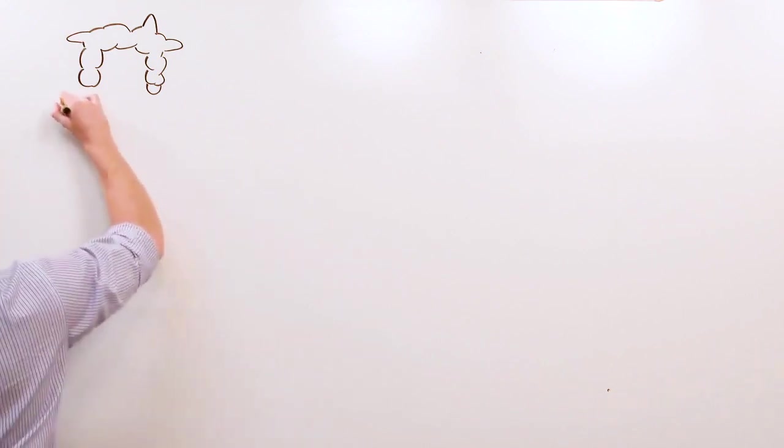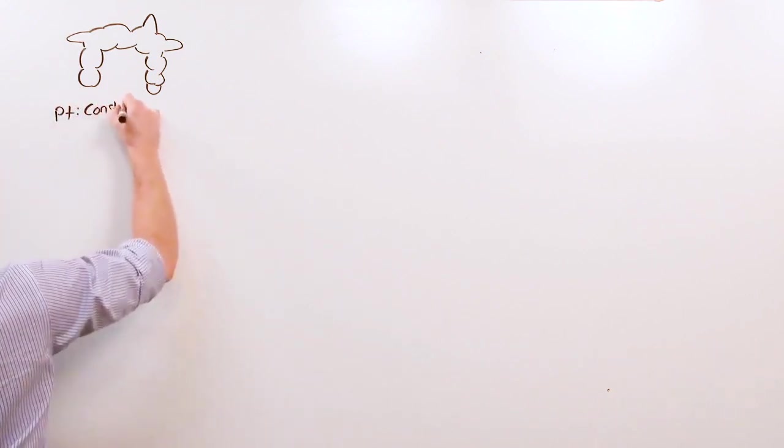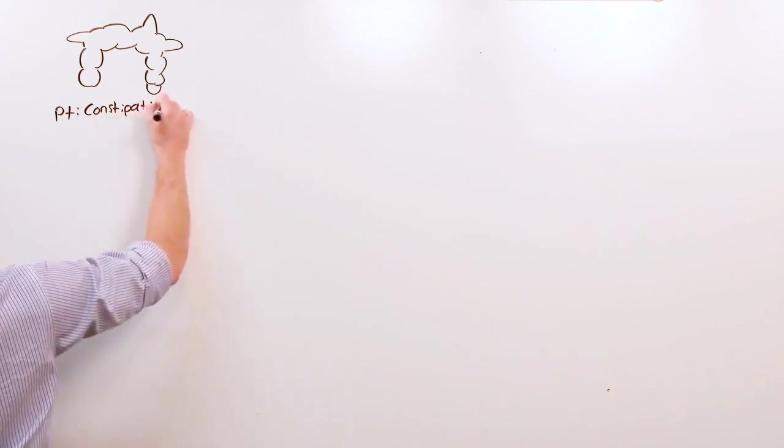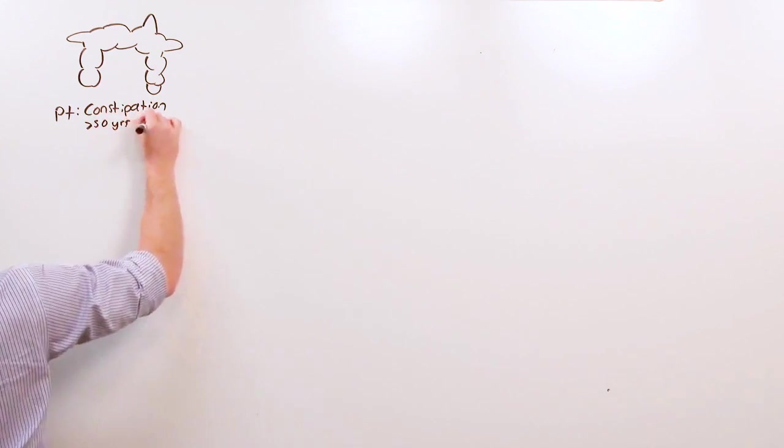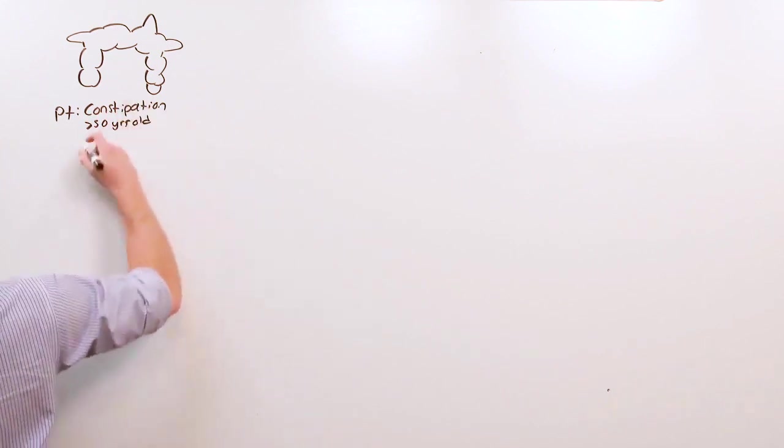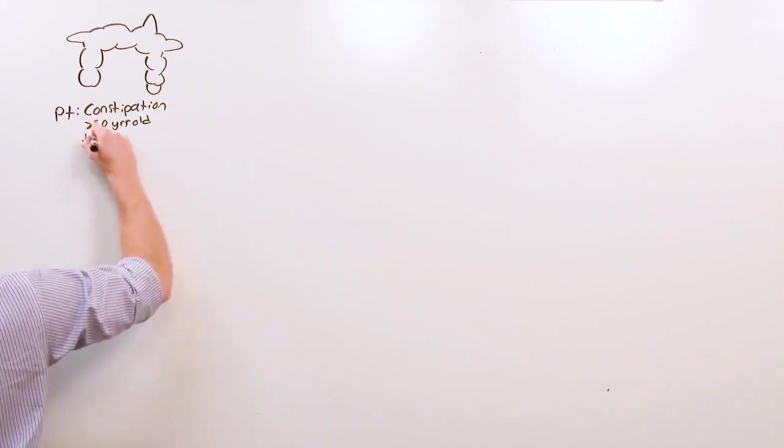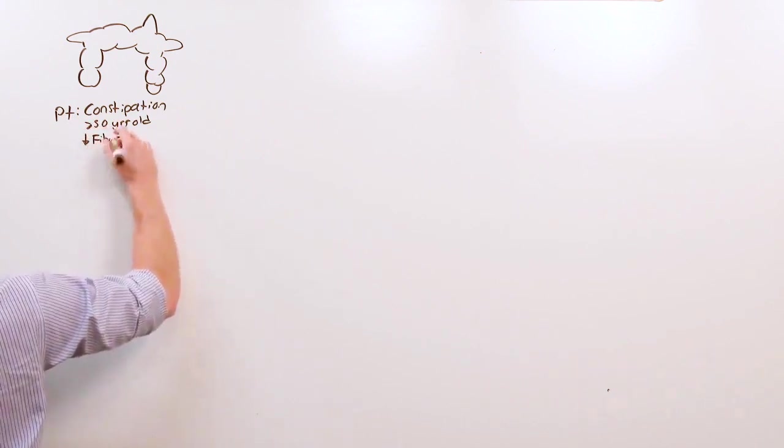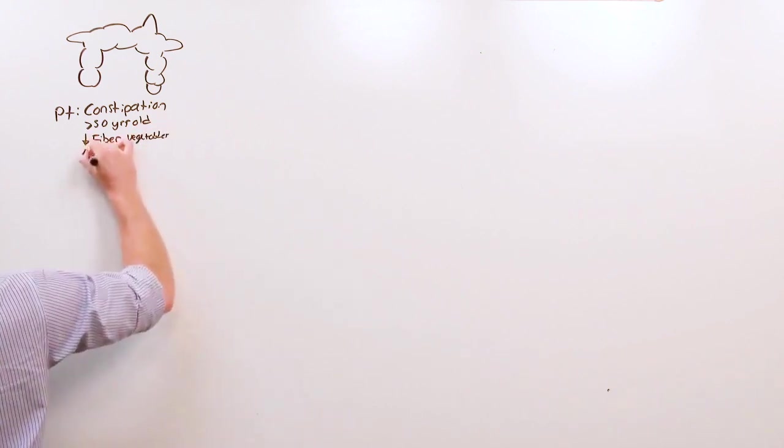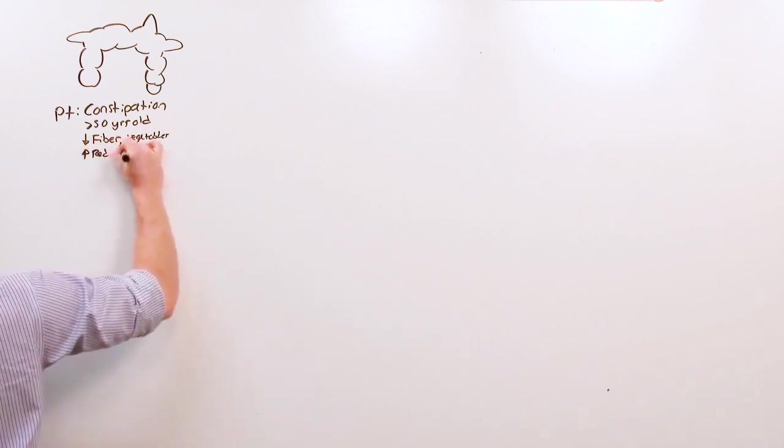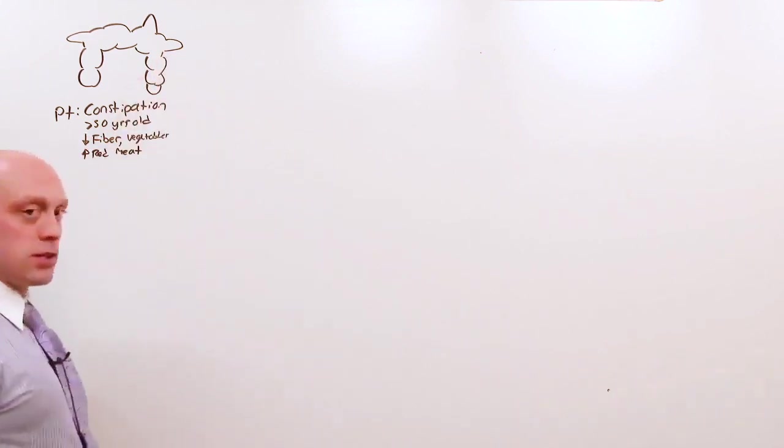Usually the type of person who gets this has constipation for a long time, usually over 50 years old. Those who have diets poor in fiber and vegetables, rich in red meat - a western diet makes you apt to get diverticula.